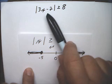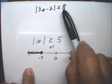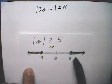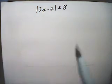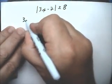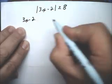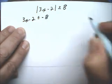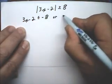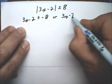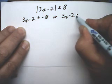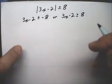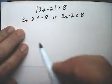So first of all, I'm going to say this is less than or equal to negative 8, or this is greater than or equal to positive 8. So 3x minus 2 is less than or equal to negative 8, or 3x minus 2 is greater than or equal to positive 8. Now I solve these separately, and that's the answer.